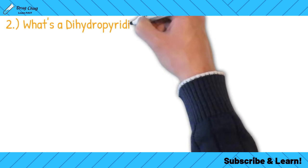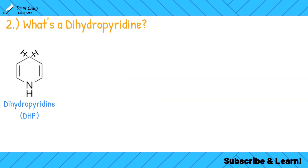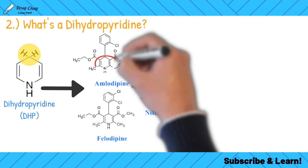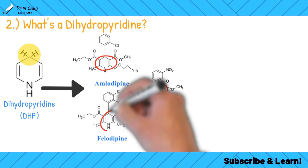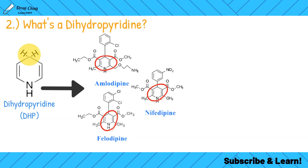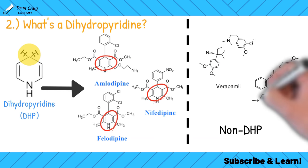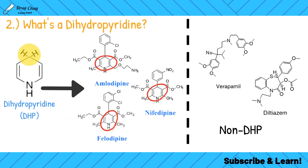The dihydropyridine ring is a nitrogen ring that gets its name from having two hydrogens at the top. Looking at the structures of the three DHP calcium channel blockers — amlodipine, nifedipine, and felodipine — they all share this ring structure. On the flip side, the non-dihydropyridines — verapamil and diltiazem — do not have that dihydropyridine ring.